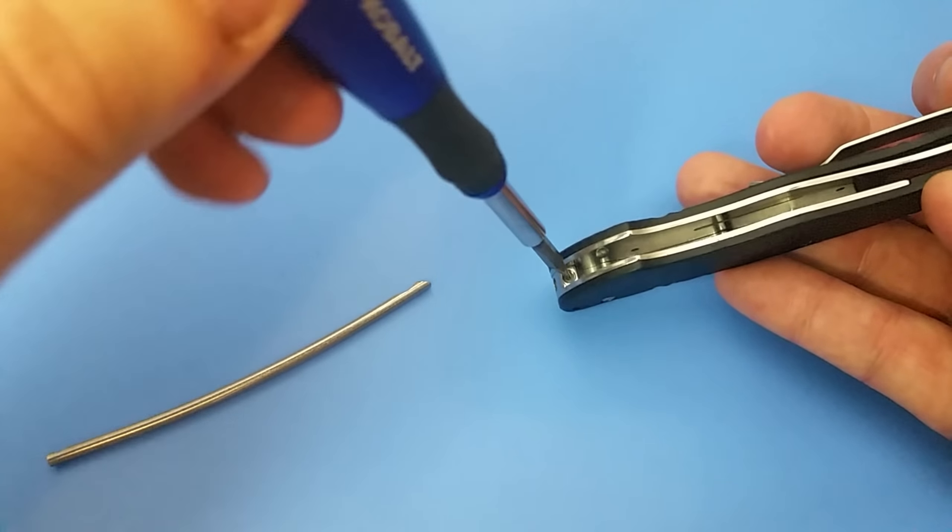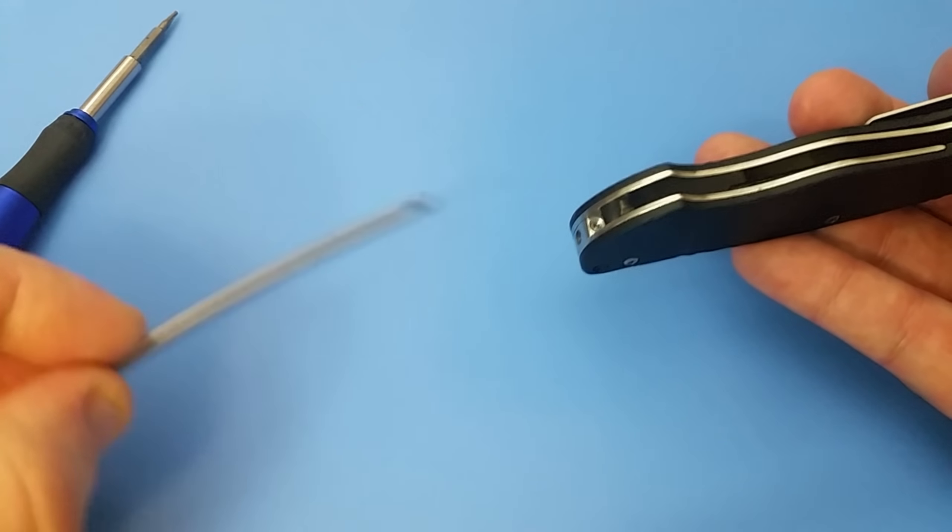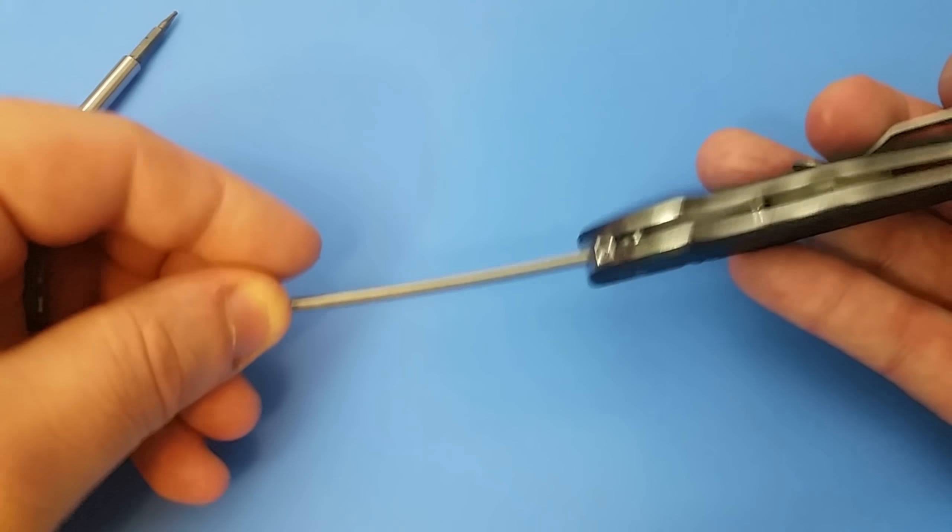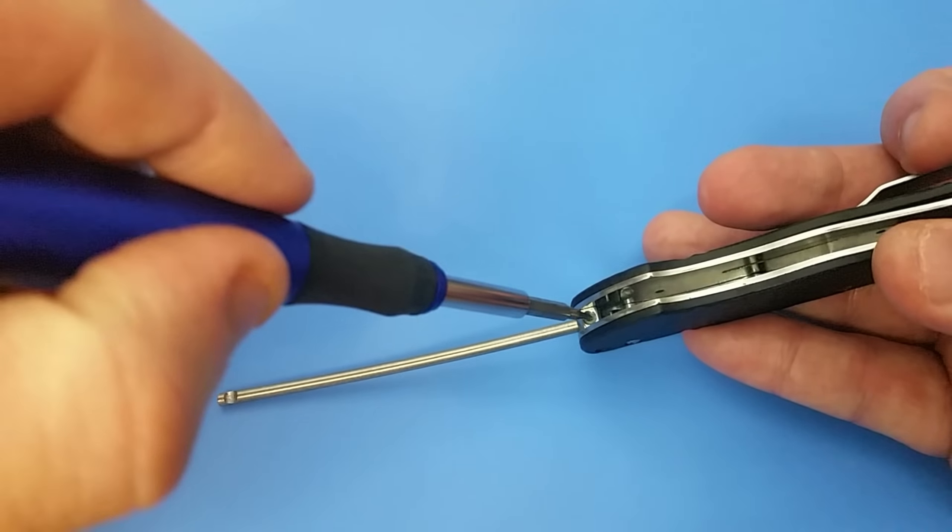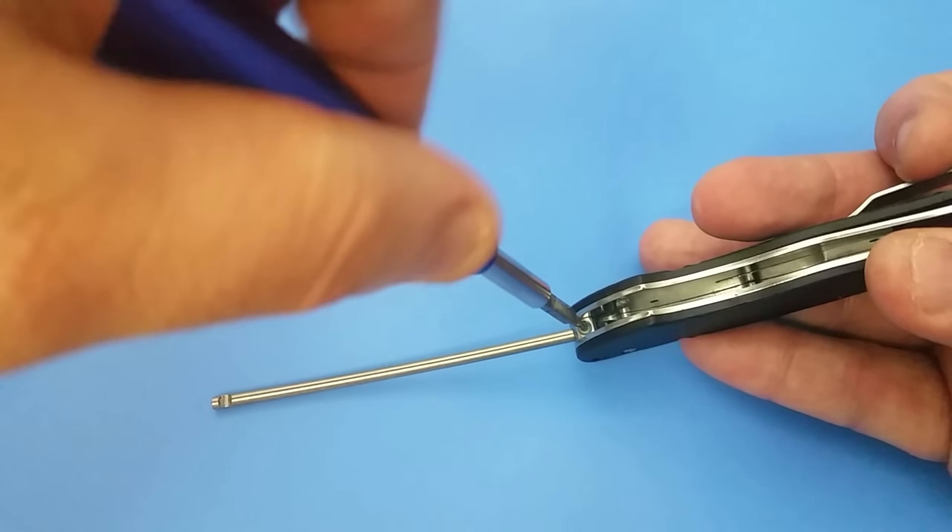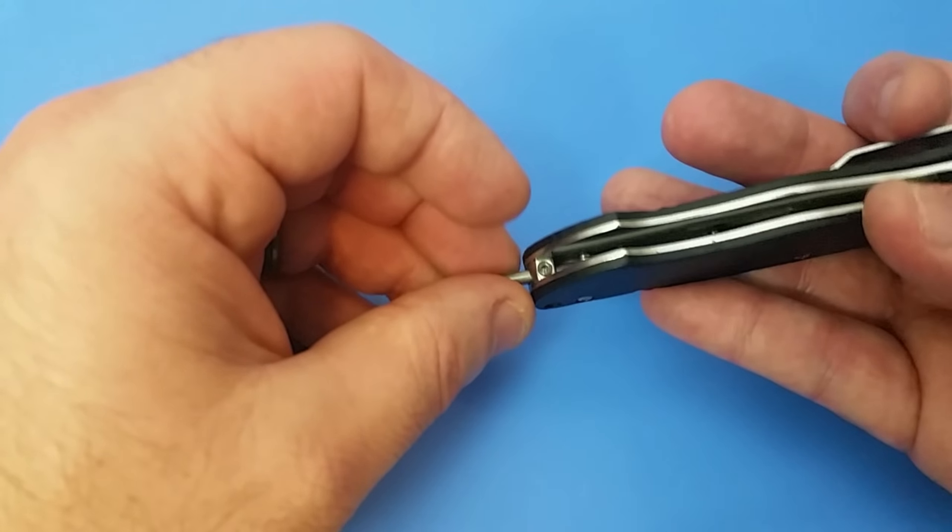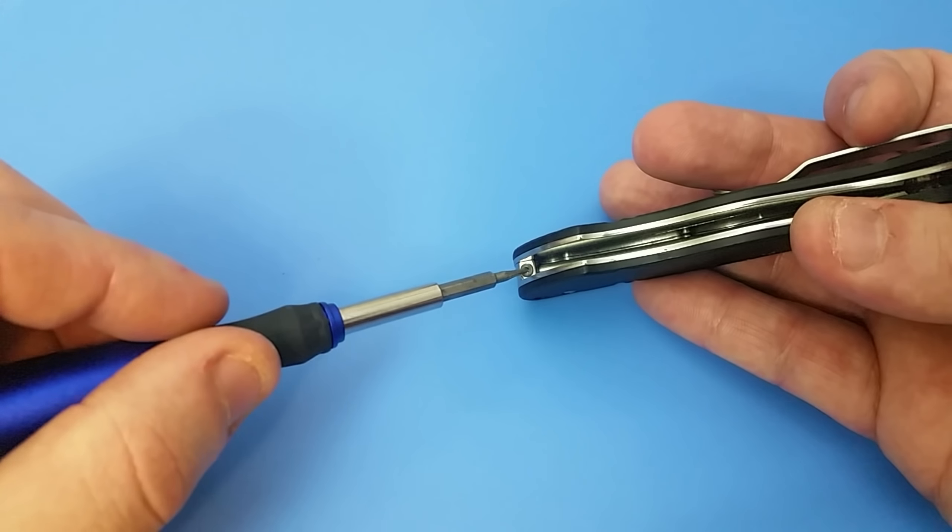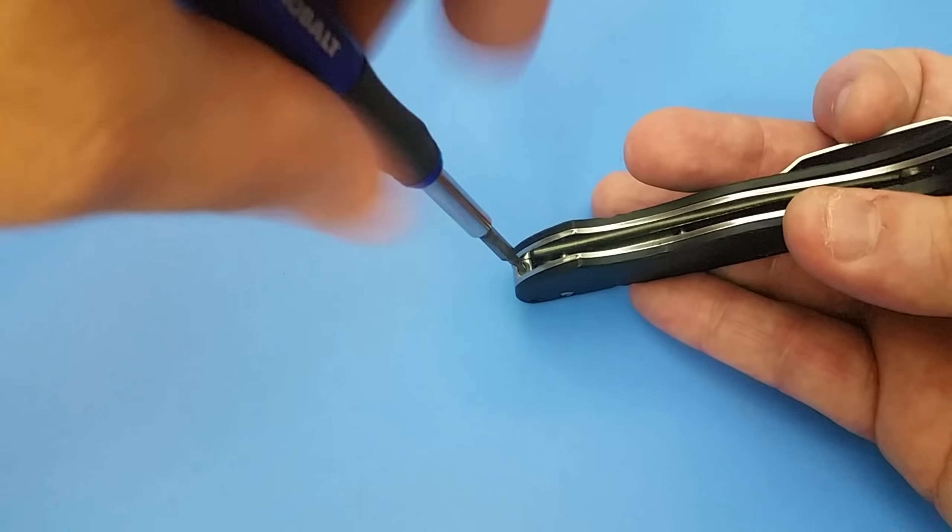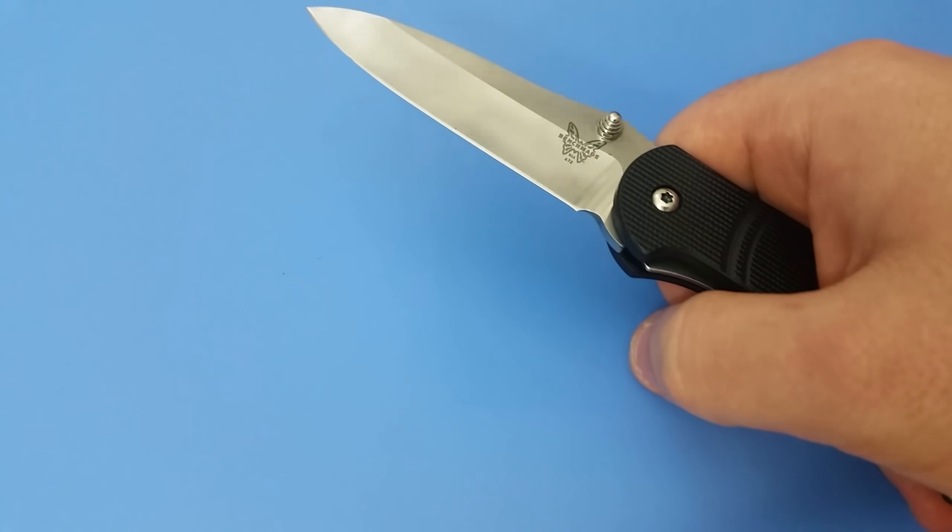And to put it back together, you know, you just have to loosen this screw a little bit. Yeah, maybe loosen it just a little bit more to give clearance to the bar. But there you go, you just push the bar all the way back in, tighten your screw, and we've got assisted opening. Isn't that something?